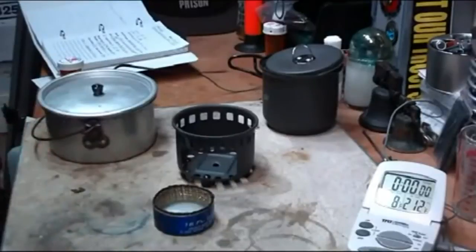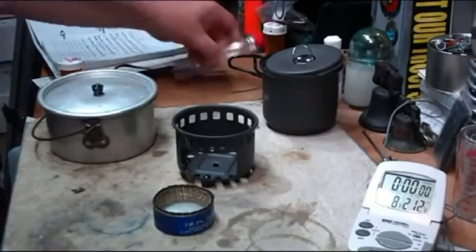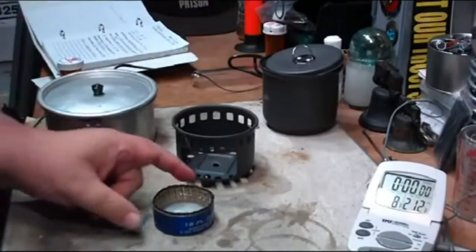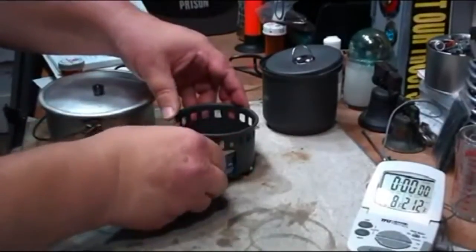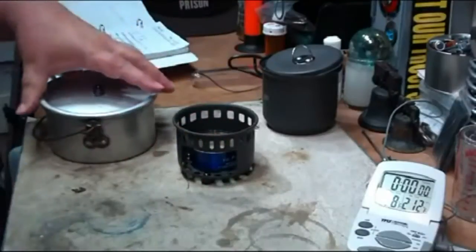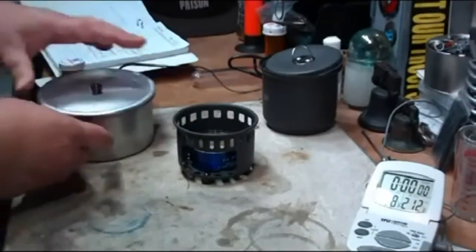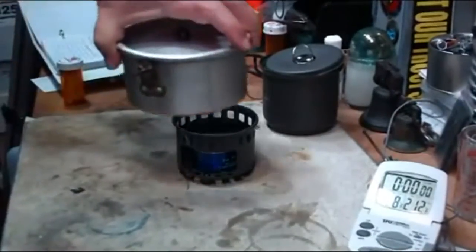So I have my Cottle vertical wick burner, one ounce of alcohol in there, slide it into the burner. I have two cups of water in the standard Boy Scout pot.